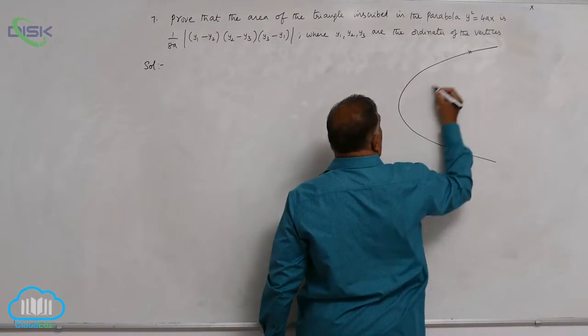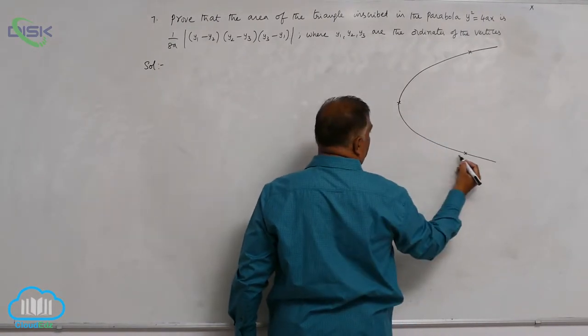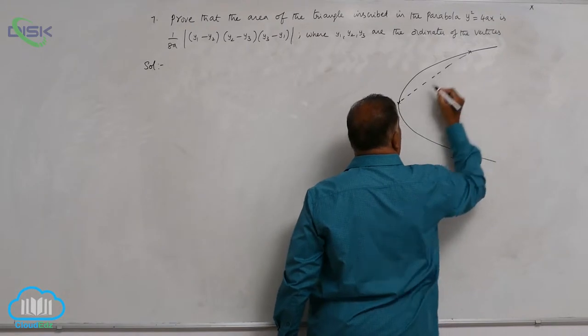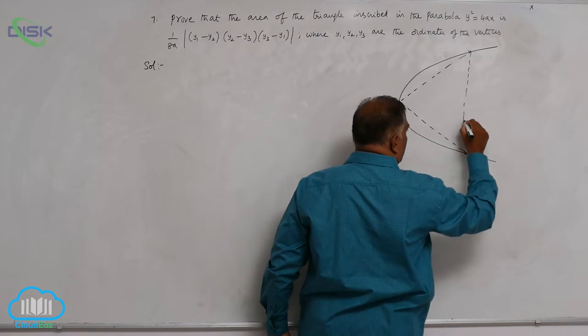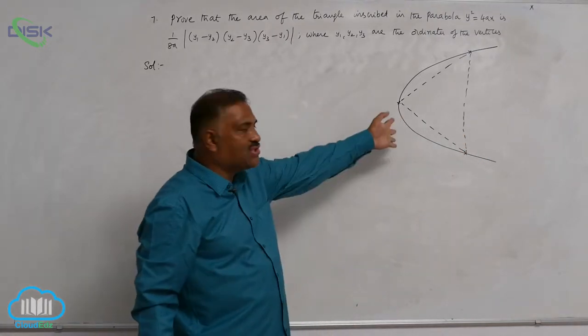Now let us take the parabola like this. Let us take a point here, point here, point here. Join these three points like this. Now you require to find out area of this triangle.